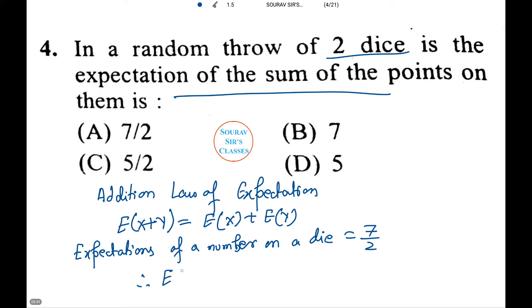Therefore expectation of X plus Y equals expectation of X plus expectation of Y, which equals 7 by 2 plus 7 by 2, which equals 7. Thus option number B is the correct answer.